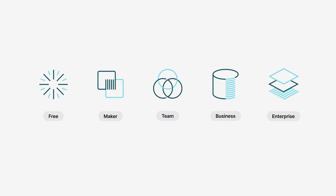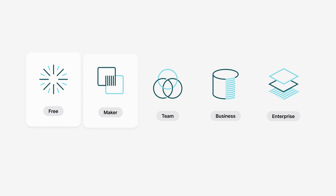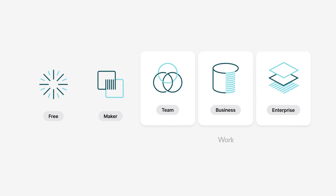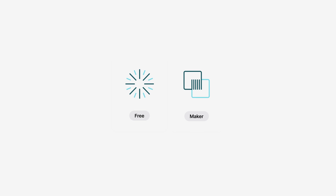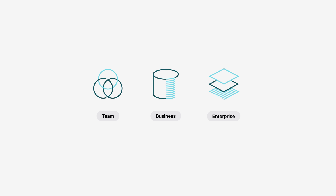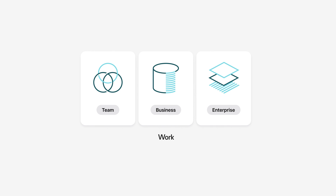At a high level, there are two primary ways people use Glide. Either they're individuals building apps for their own projects and communities, or they're a team or company building apps for work. The free and maker plans are ideal for building apps with personal users only — users with emails like Gmail, Outlook, or .edu domains. The team, business, and enterprise plans are perfect for work use cases, allowing any type of user to sign in.